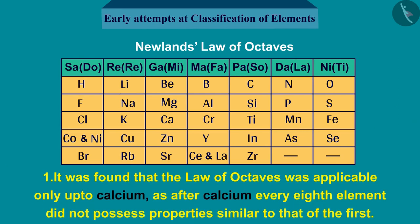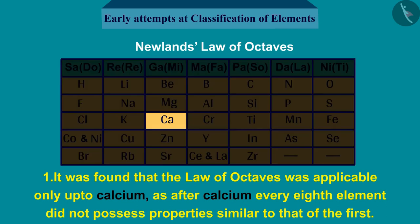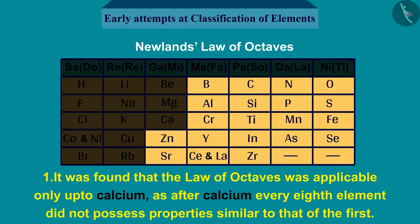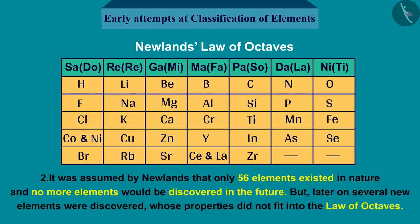First, the Law of Octaves was applicable only up to Calcium, because after Calcium every 8th element did not possess properties similar to that of the 1st. Second, Newlands assumed that only 56 elements existed in nature and no more would be discovered in the future. But later on, several new elements were discovered whose properties did not fit into the Law of Octaves.